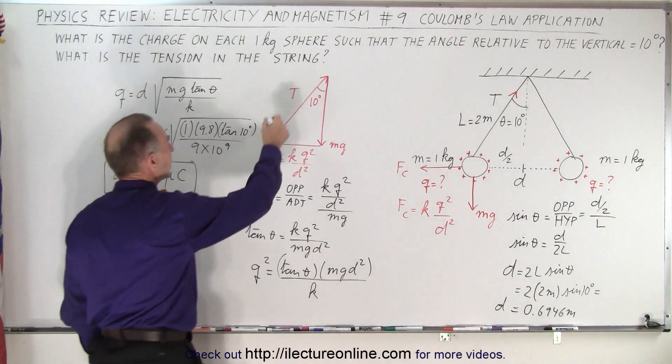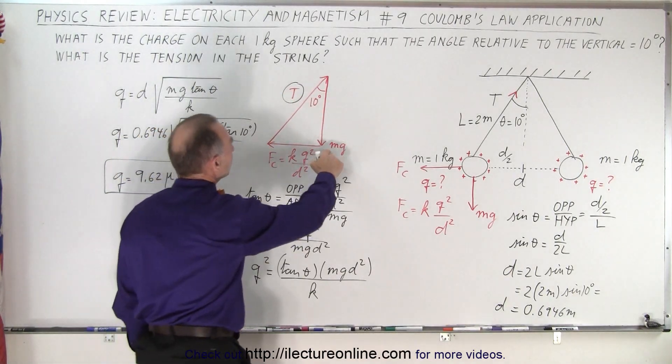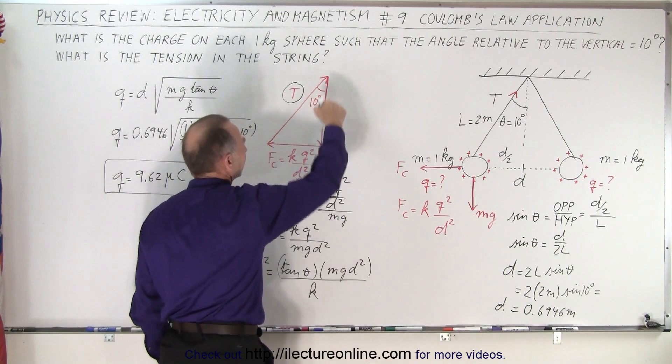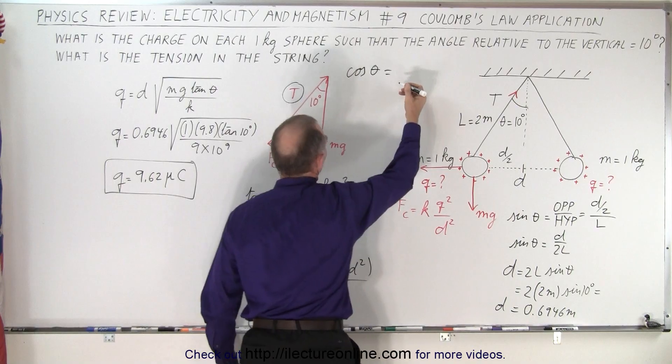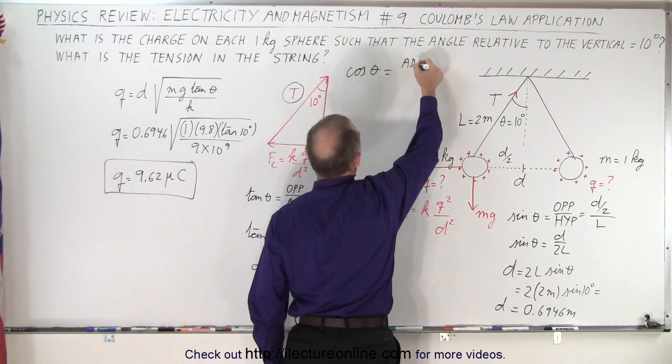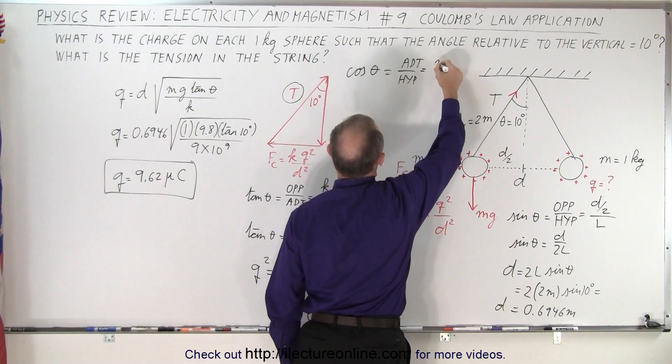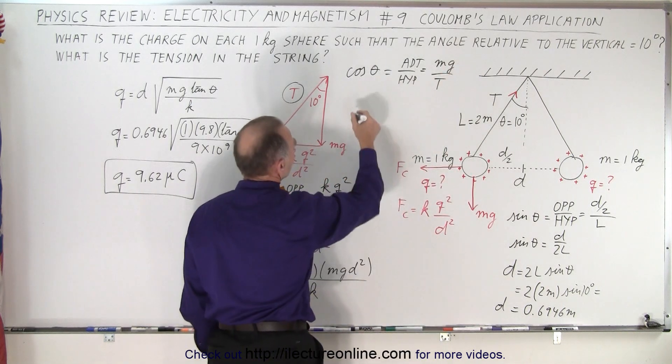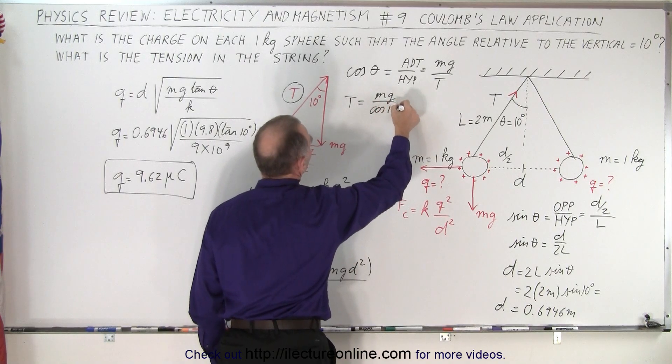What about the tension? Now we need to find the tension. Well, we know mg, we know the angle, and that's the hypotenuse. So mg is the adjacent side, so we can say that the cosine of theta is equal to, by ratio, the adjacent side divided by the hypotenuse. So this case, the adjacent side is mg, and the hypotenuse is T, which means that T is equal to mg divided by the cosine of 10 degrees.